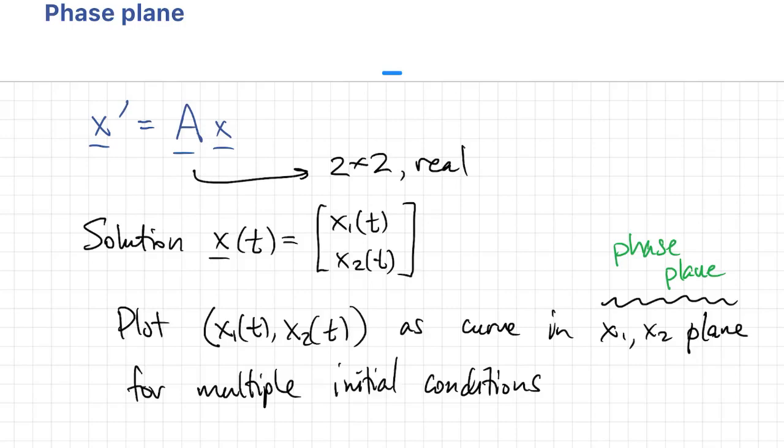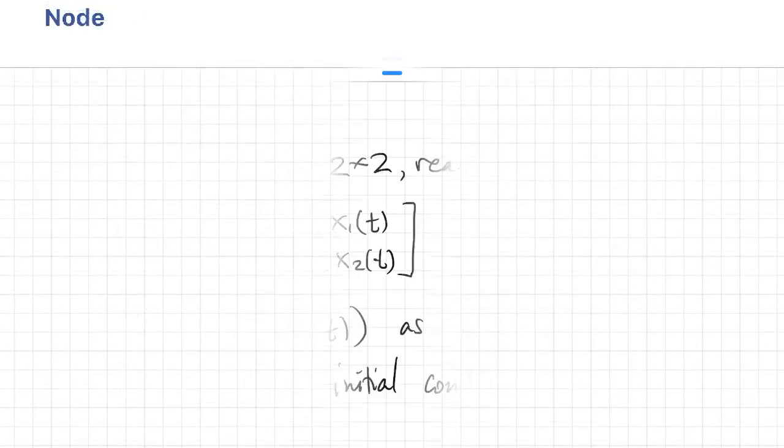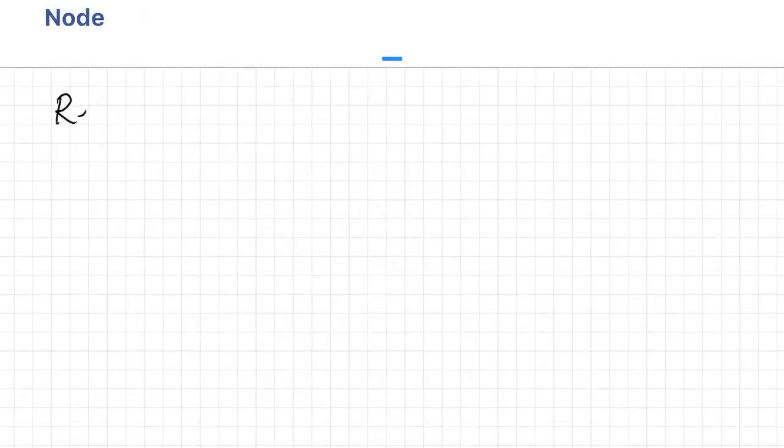This x1, x2 plane is usually called the phase plane. Now except for some special edge cases, there are four main types of fixed point that we can observe.